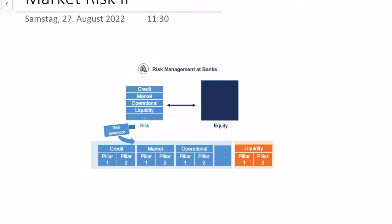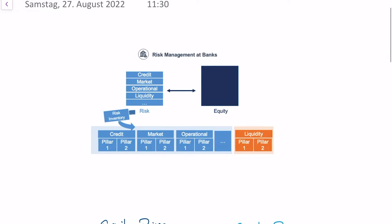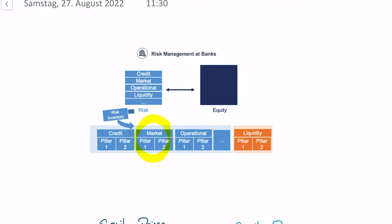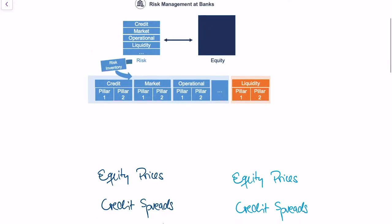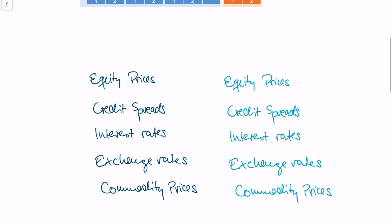Today we're talking about market risk at banks. As a quick recap, risk management is about balancing risk and equity. To understand our risk as a bank, we need to understand different risk sources — called risk types in banking. One of the most important risk types is market risk, and as you can see, there are pillar one and pillar two approaches to calculating it.